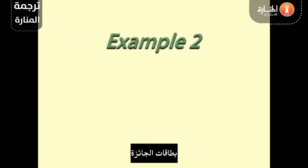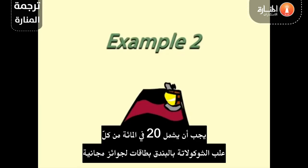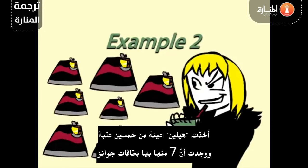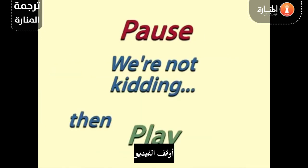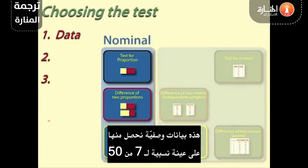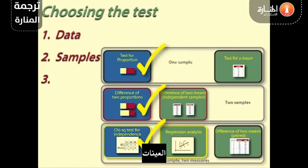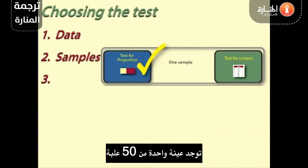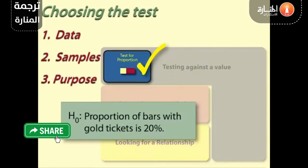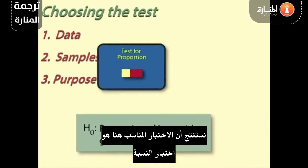Example 2: Prize tickets. In a promotional campaign, 20% of all packets of choc-a-nutties should include tickets for free prizes. Helen takes a sample of 50 packets and finds that 7 of them have winning tickets. 1. Data: For each bar we are saying yes or no depending on whether or not there is a ticket. This is nominal data, from which we get a sample proportion of 7 out of 50, or 0.14. 2. Samples: There is one sample of 50 packets. 3. Purpose: Helen is comparing the sample value against a given value of 20%. We conclude that the test she needs to use is test for a proportion.